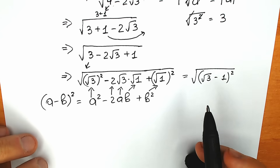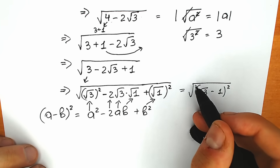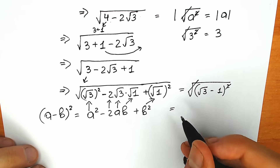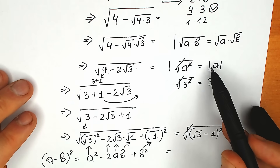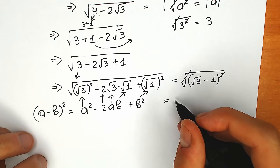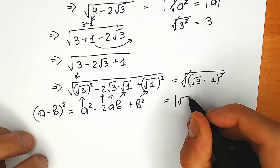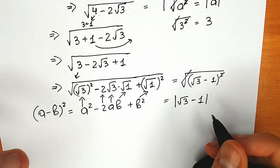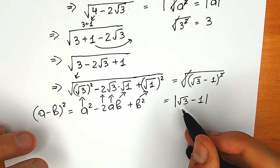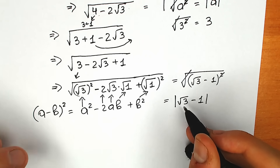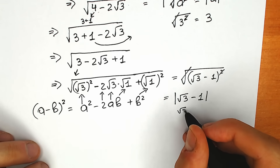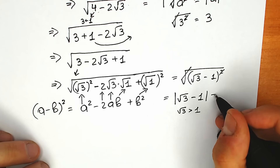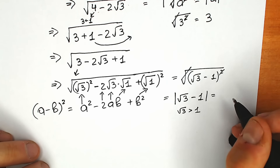This is the main purpose of what we did — because right now we can easily cancel our square root sign and the square power. As I said before, this equals the absolute value of the expression. So we need to write the absolute value of (square root of 3 minus 1). Now we need to find out whether this expression is positive or negative. Square root of 3 is greater than 1, obviously, so this expression is positive. We can get rid of the absolute value brackets.